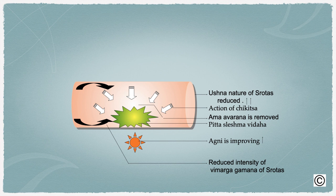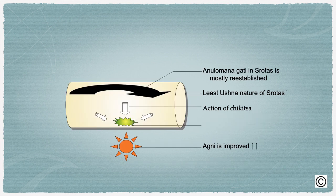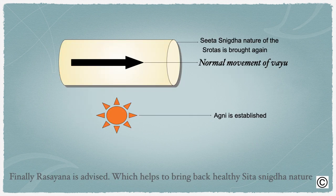Anulomana gati of vata is very important. Whenever there is an issue with movement of vata — if it is going in vimarga or pratiloma — vata anulomana medicines must be given. After this stage, we start imparting snigtha nature to the system: once vata is restored, pitta is under control, agni is improved, then slowly snigtha can be given. Usually in all chronic diseases, snigtha must be given in later stages, agni is established, and finally rasayana is advised to bring back the healthy shita-snigtha nature.